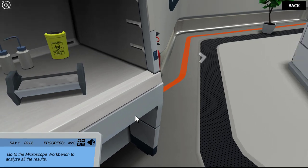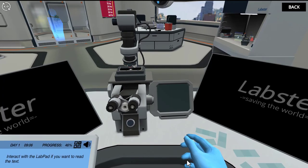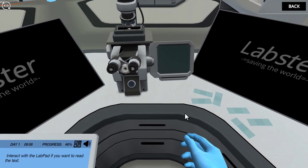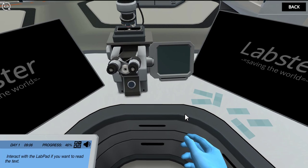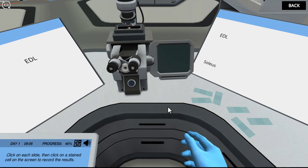Go to the microscope workbench to analyze all the results. Each of the six slides on the workbench contains a beautifully stained slice of either EDL or soleus muscle tissue. Take a look. Click on each slide, then click on a stained cell on the screen to record the results.